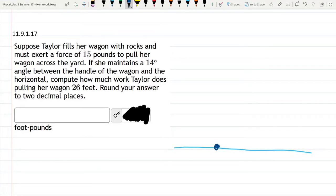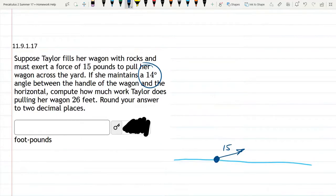We draw everything as a dot. We don't need to get creative. 15 pounds to pull her wagon across the yard, and now we are given an angle of 14 degrees. So that's describing the direction she's pulling. She's pulling not quite flat. She's pulling with 15 pounds, so that's the magnitude, and the 14 degrees is the angle right there.